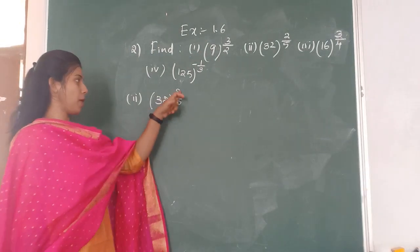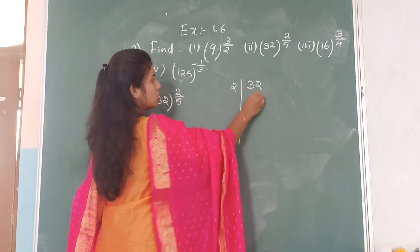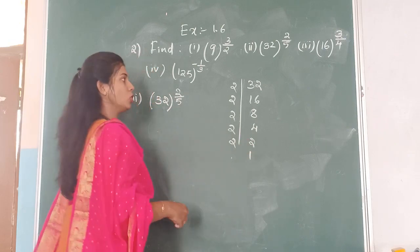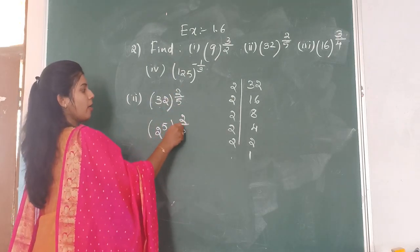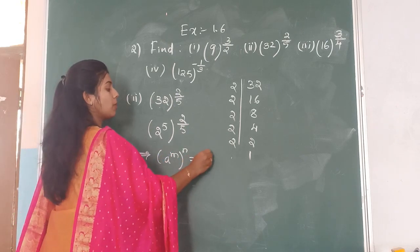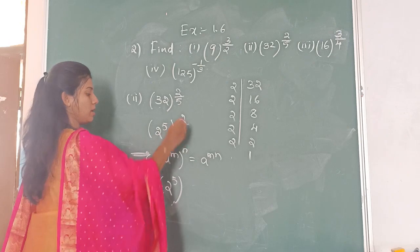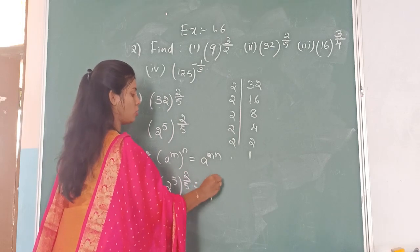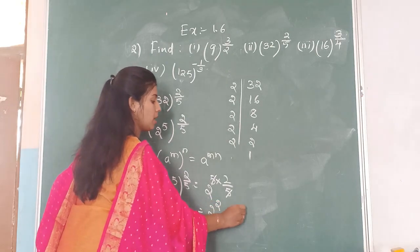The second one is 32 to the power of 2 by 5. From earlier, 32 = 2 to the power of 5. So we have 2 to the power of 5, whole to the power of 2 by 5. Applying the law: A is 2, M is 5, N is 2 by 5 — powers multiply: 5 into 2 by 5, the 5s cancel, leaving 2 squared. The value of 2 squared is 4.